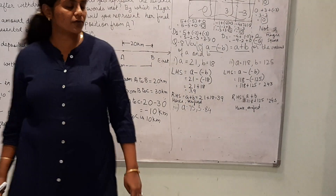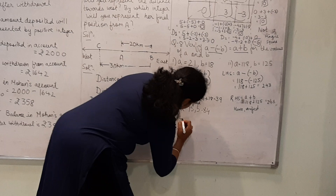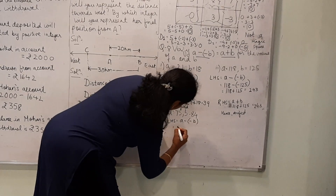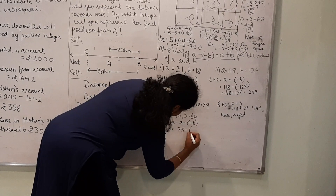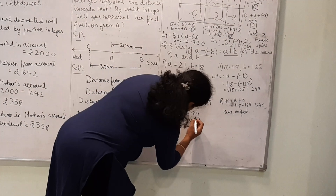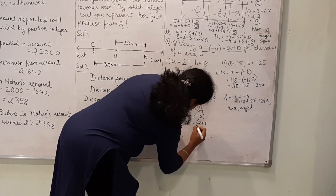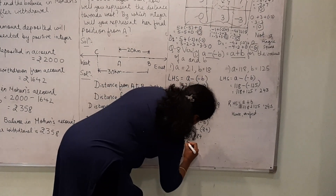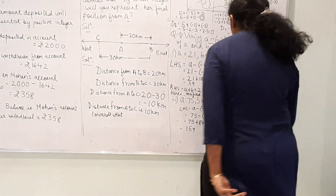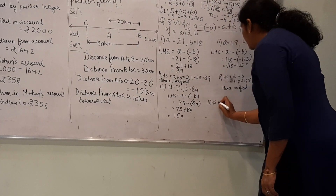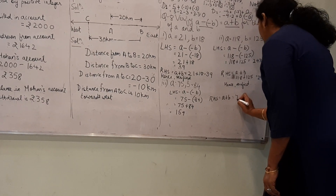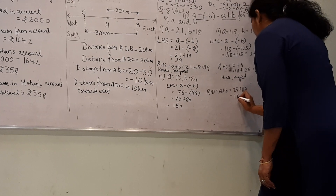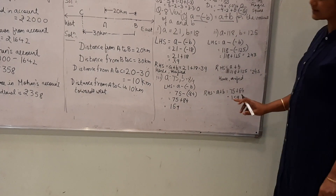For question 3: LHS is A minus (-B), where A = 75 and B = 84. So 75 plus 84 equals 159. RHS is A plus B equals 75 plus 84 equals 159. Both are equal. Hence verified.